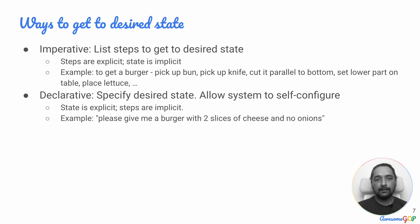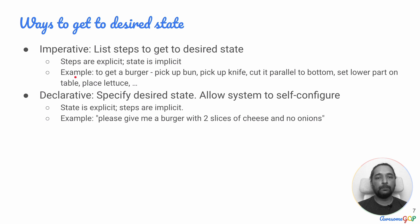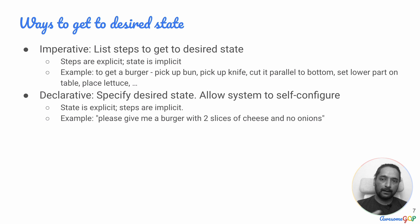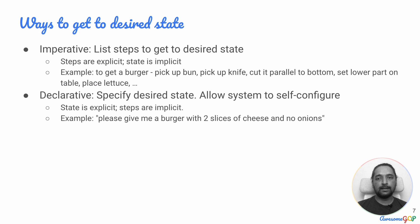The state itself is not explicitly mentioned — it's implicit. For example, if you wanted to get a burger, one way would be to instruct somebody on how to make it: pick up bun, pick up knife, cut it parallel to bottom, place over bottom table, place lettuce, and so on. In that example, you're issuing commands for every step so that it goes from state to state.